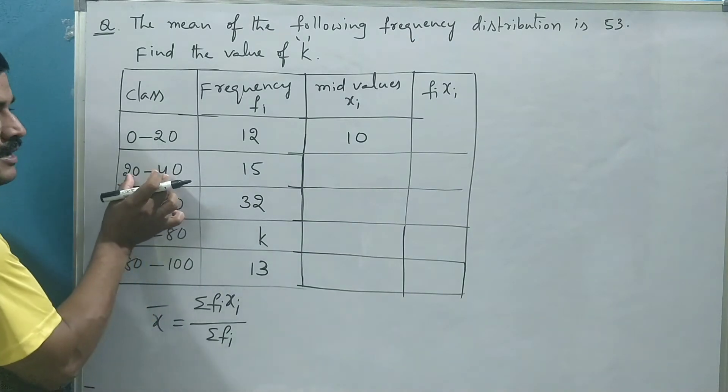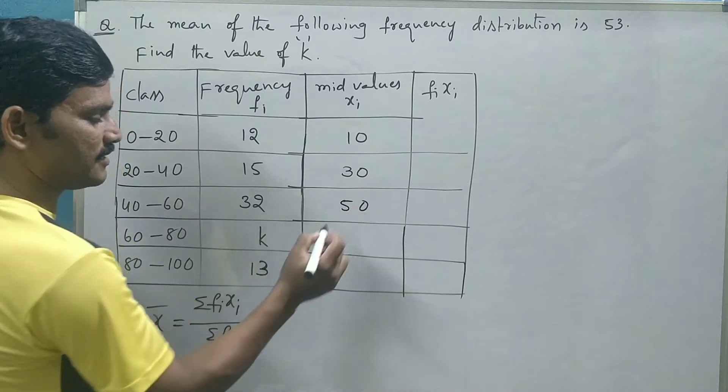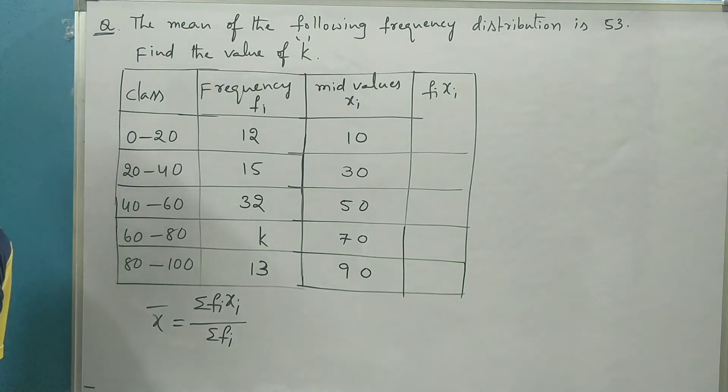And half of 60 is 30. For this class interval, 50, 70, 90. So what is mid value? Mid value is average of the limits of a class interval.